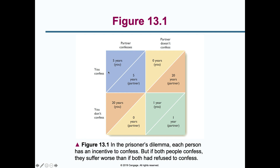In the top-left blue quadrant, if both you and your partner confess, each of you receives five years of jail time — an equal split. In the top-right, if you confess but your partner doesn't, you receive zero years because you confessed, while your partner receives 20 years. Your behavior worked only in your own favor — you were thinking just about yourself.